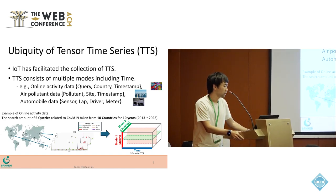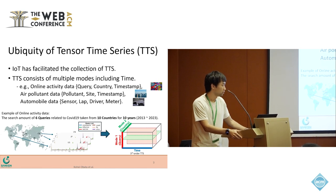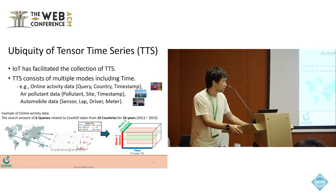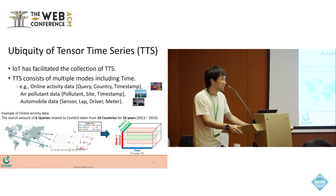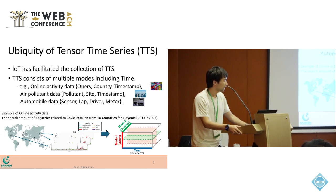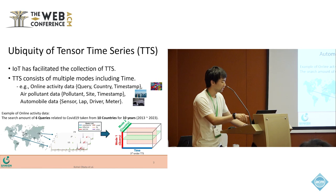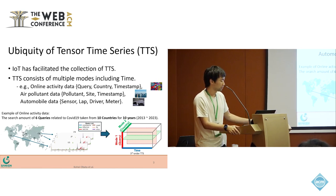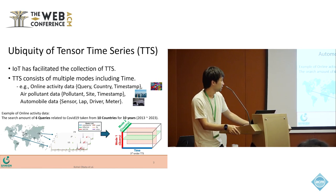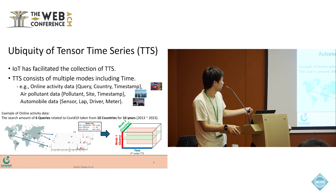Although tensor is a generalization of a vector, in this research we refer to a tensor time series as a time series sequence that contains more than three modes. An example of tensor time series is online activity data. If you obtain the search amount of some queries for some years, it forms a multivariate time series.